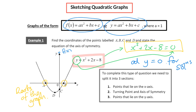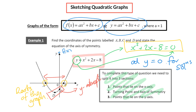Roots and solutions are interchangeable terms. What we're going to look at is how to use that to sketch a graph — what we recognise about those roots, since they lie on the x-axis. We also need to find two extra points: one is effectively the y-intercept, and the other lies right in the middle of points a and b. To complete this type of question there are three sections: find the points on the x-axis, find the turning point and axis of symmetry, and find the points on the y-axis.